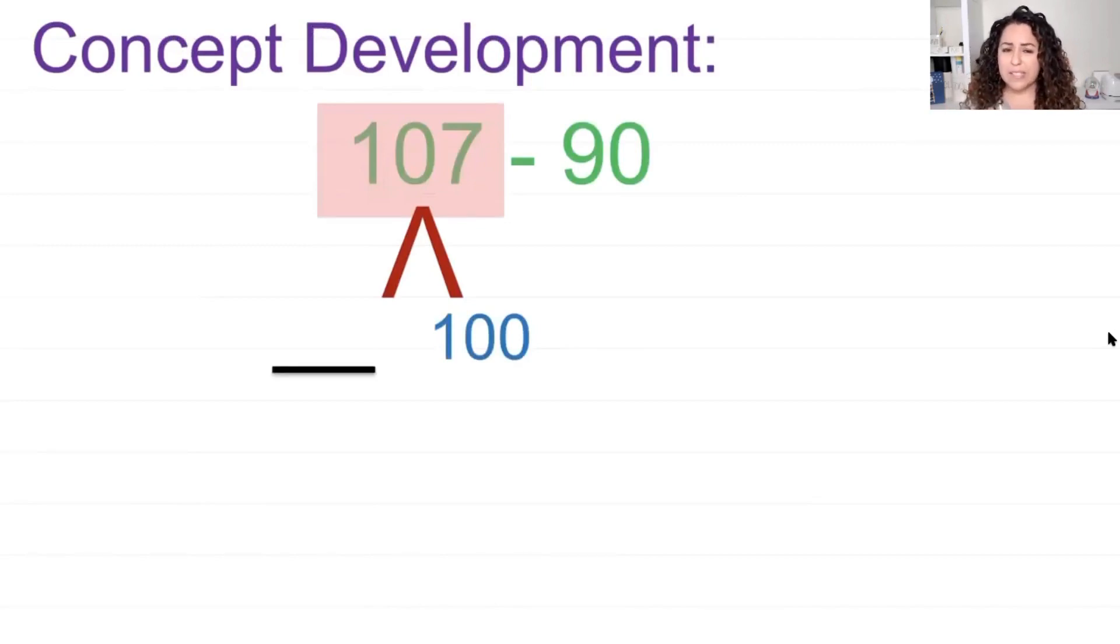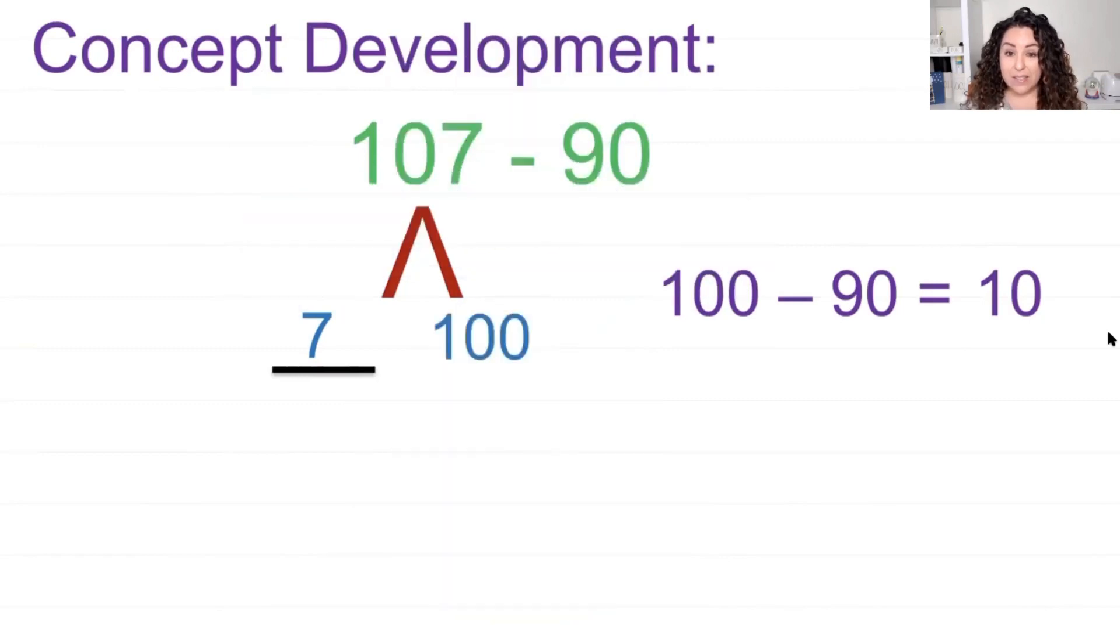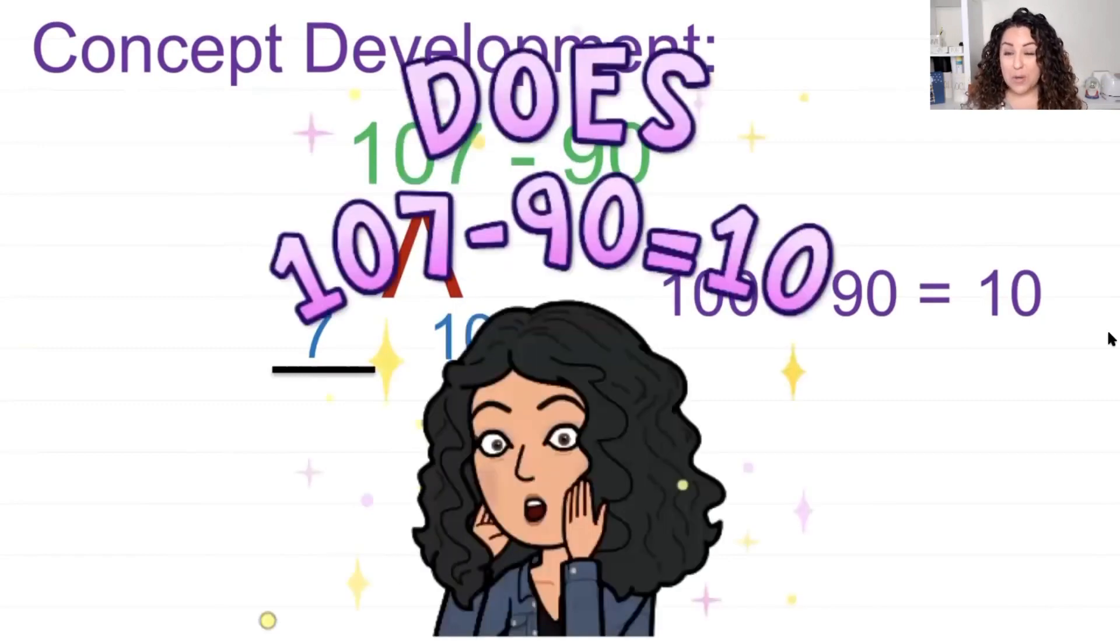Let's get started with our concept today. I have a problem right here, 107 take away 90. That looks a little difficult, but let me show you an easier way. The first thing we're going to do is we're going to focus on that number 107 and let's take it apart. I'm going to take out 100 and some ones. Now I need to figure out what's left. If I took out 100 and it's 107, that means I have seven left. And I'm going to do 100 take away 90. So let's see what that is. 100 take away 90 is equal to 10. So am I finished? Does 107 take away 90 equal 10?